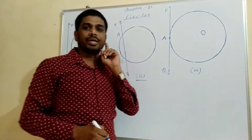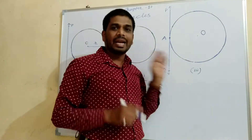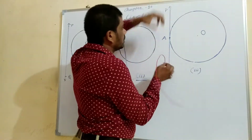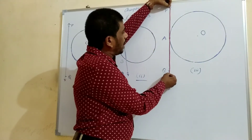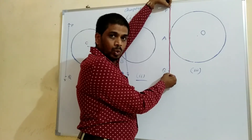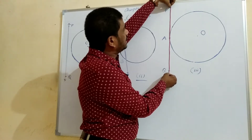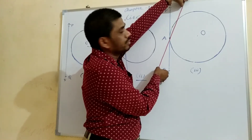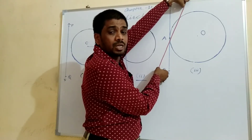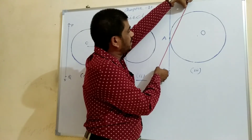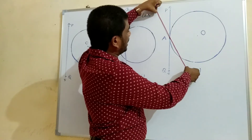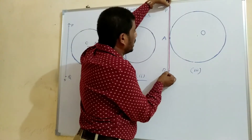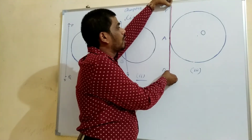Only one tangent can be drawn at every point of a circle. Let us see this with an activity. This is the tangent PQ passing through point A. If we rotate this line, A is fixed but another common point appears, which means it becomes a secant. If you rotate the other way, A is still fixed but another point also appears, making it a secant again. This proves that only one tangent can be drawn at every point of a circle.